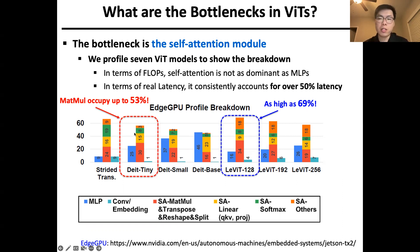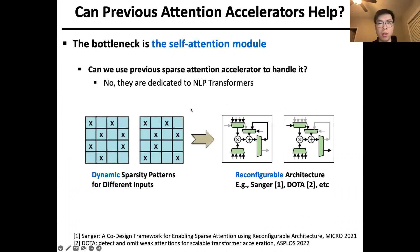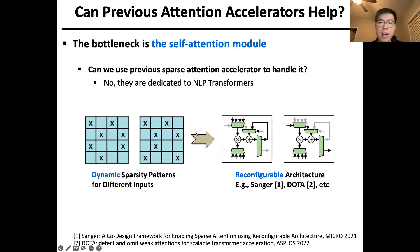Therefore, how to accelerate this core matrix multiplication in self-attention is the key for VIT acceleration. One natural thought is to look for existing attention accelerators — in other words, sparse attention accelerators. But unfortunately, they are dedicated to NLP transformers that have dynamic sparse attention patterns for different inputs, and thus have to cooperate with reconfigurable architectures with large overheads, for example, Sanger in Micro and DATA in S+.